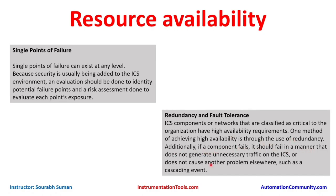If a component fails, it should fail in a manner that does not generate unnecessary traffic on the ICS or cause another problem elsewhere — cascading impacts from one failure to another should be avoided. Fault tolerance can be achieved through RAID configurations such as RAID 0, RAID 1, RAID 5, RAID 6, or higher. With RAID, if one disk fails, there is no impact on the remaining data. Server clustering is another example of fault tolerance.